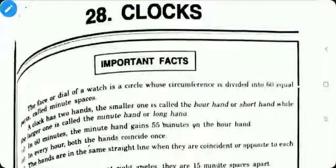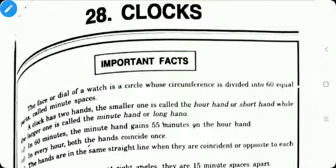Dear students, now we will start with unit 5. It consists of four parts. First is clock, second is calendar, third is ratio and proportion and fourth is allegation and mixture.